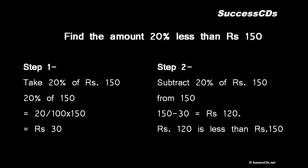Second step: since I needed amount to be less than rupees 150, therefore I subtracted 20 percent of rupees 150 from rupees 150. From rupees 150, 20 percent was rupees 30. 150 minus 30 comes out to be rupees 120. This is the amount 20 percent less than rupees 150.